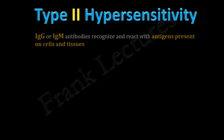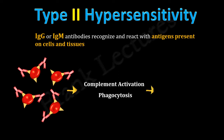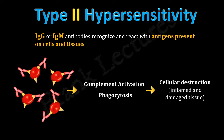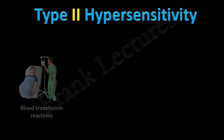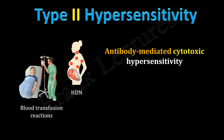Type 2 hypersensitivity reactions result when IgG or IgM antibodies recognize and react with antigens present on cells or tissues. This further results in activation of complement and phagocytosis. Cellular destruction takes place, ultimately resulting in inflamed and damaged tissue. Examples include blood transfusion reactions, hemolytic disease of the newborn, and drug-induced hypersensitivity. Type 2 hypersensitivity reactions are also known as antibody-mediated cytotoxic hypersensitivity. The term cytotoxic indicates that these reactions result in destruction of host cells. Type 2 reactions take 5 to 8 hours to develop.